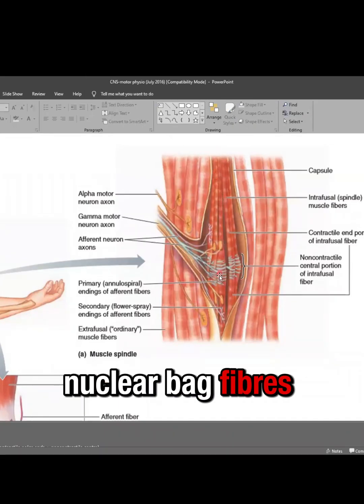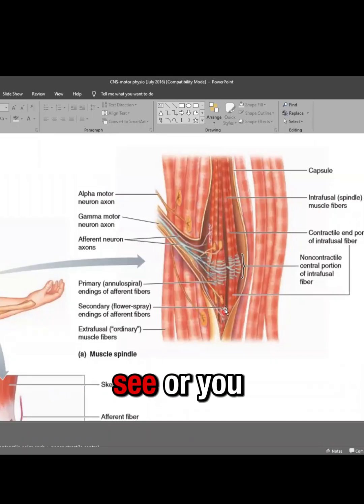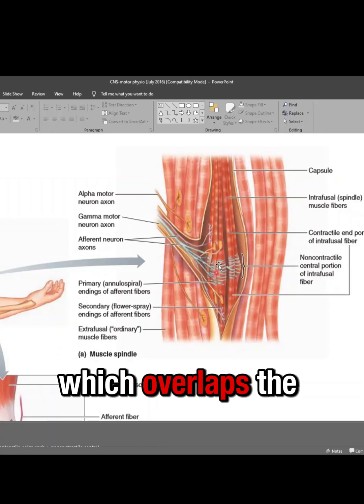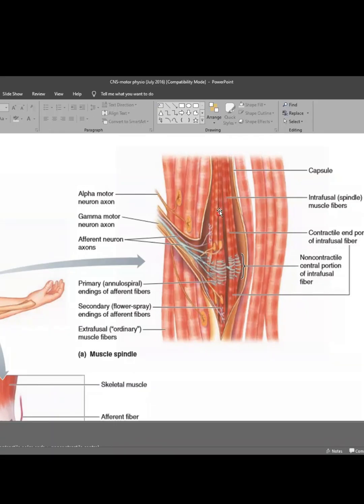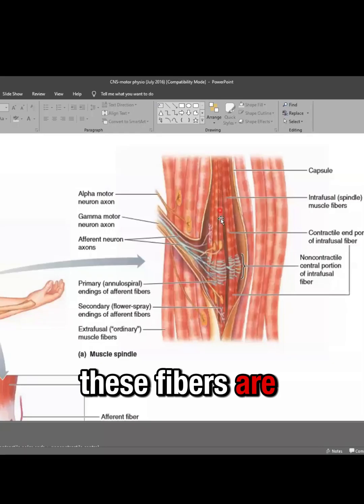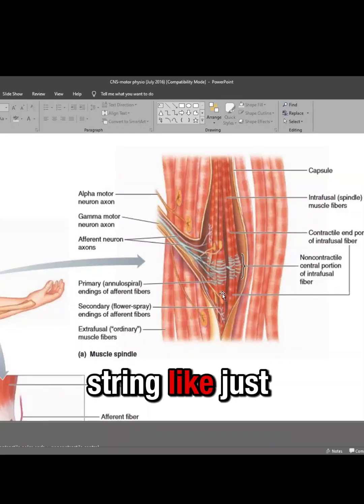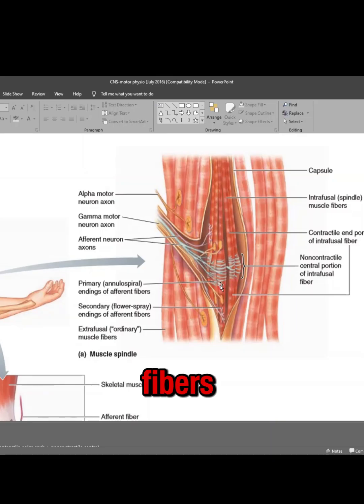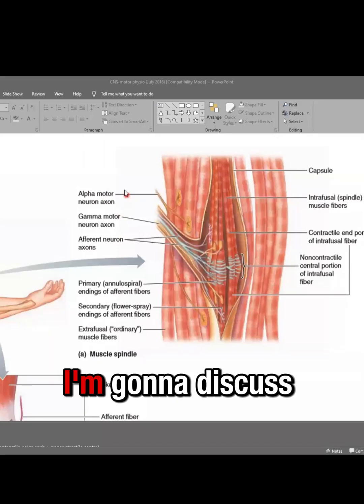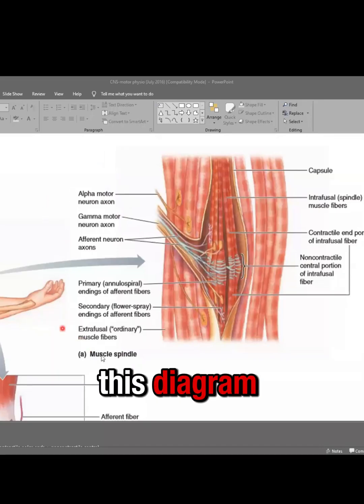These are the nuclear bag fibers. As you can see, or you may not see because of the markings of the nerve which overlaps the bag portion. These fibers are swollen in their center. So they are string-like just like the chain fibers. However, in the middle, they are swollen. Now I'm going to discuss this part of this diagram.